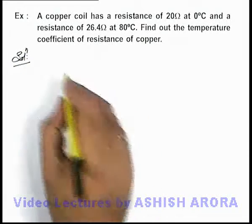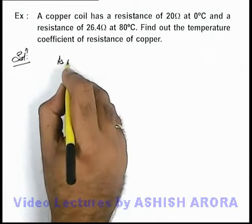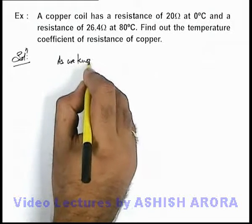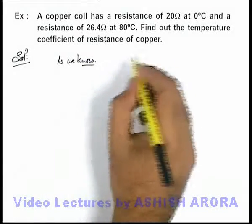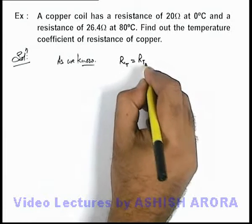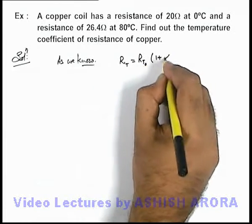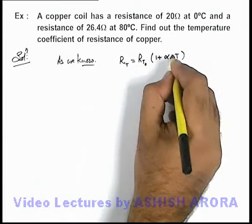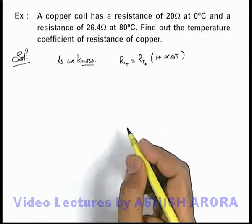Now in this situation, we can write, as we know, the variation of resistance which takes place with temperature can be given as R_T is equal to R_T0 (1 + α × ∆T), where α is the temperature coefficient of resistance.